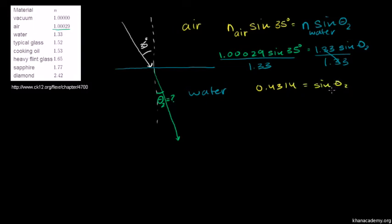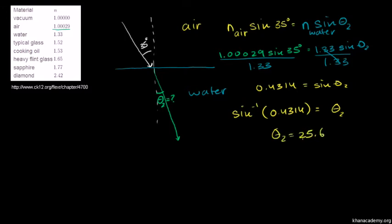To solve for theta 2, you just take the inverse sine of both sides. Theta 2 is approximately equal to 25.6 degrees. Snell's Law agrees with our car-driving-into-the-mud analogy — it bends inwards, closer to vertical. Theta 2 equals 25.6 degrees.